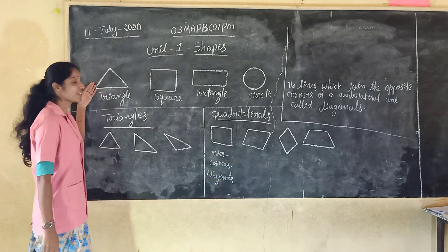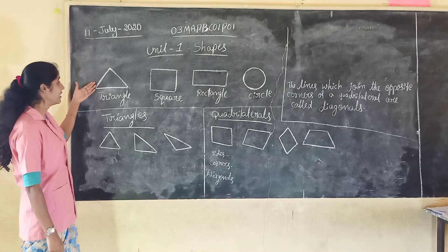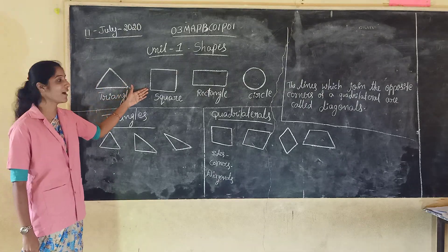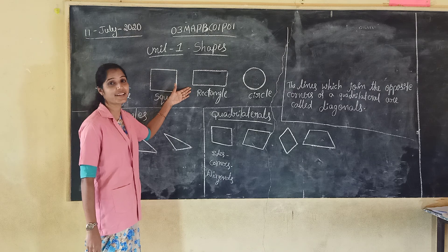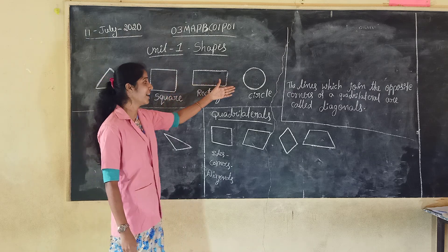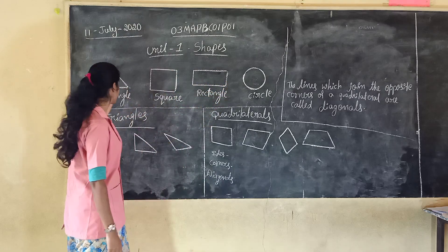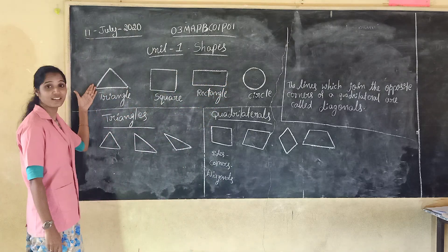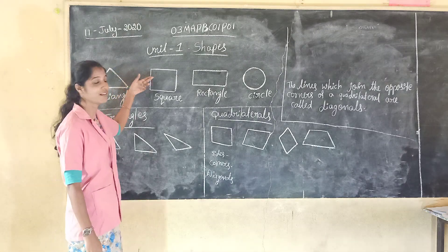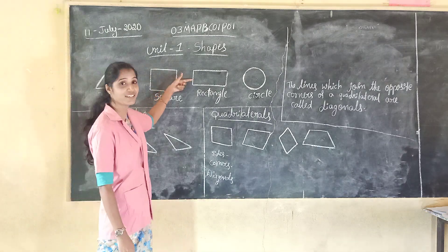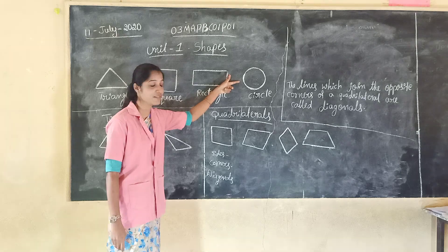See, this is the triangle, this is the square, this is the rectangle and this is the circle. Begin: triangle, square, rectangle and circle. Understood?